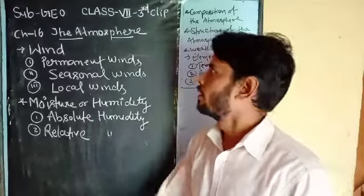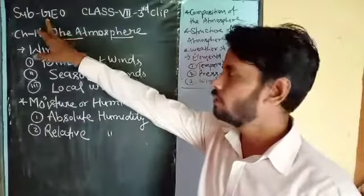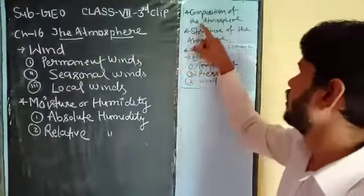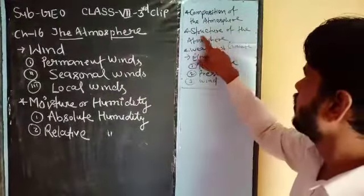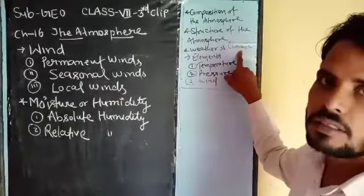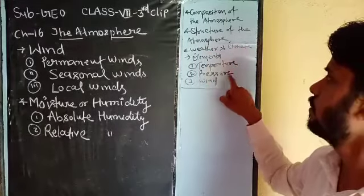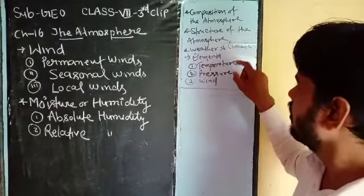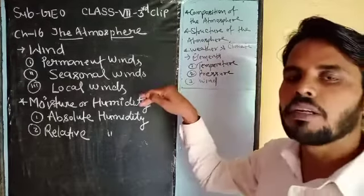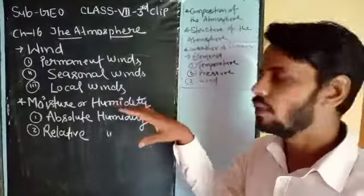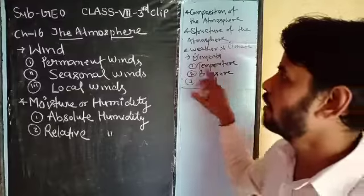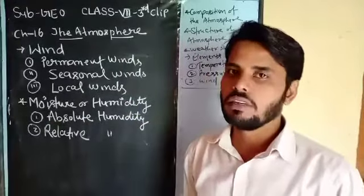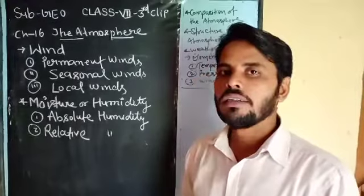Good morning class 7. This is the third clip of geography from chapter 16, the atmosphere. In this chapter you have already read these topics: composition of the atmosphere, structures of the atmosphere, weather and climate, and the elements of weather and climate such as temperature, pressure, and wind. From these elements you have read temperature and pressure previously, and the topic of this clip is the third element of weather and climate — wind — and the next topic: moisture and humidity.